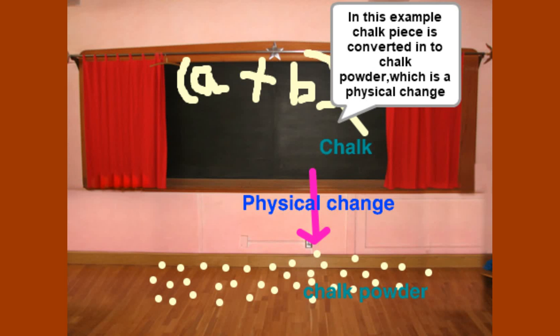In this example, a chalk piece is converted into chalk powder, which is a physical change.